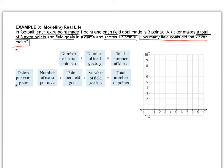I've underlined what I thought was important. Now we're going to work on the equations. The first equation is the number of extra points, which I don't know, plus the number of field goals, which I don't know, equals the total number of kicks, which I do know. So the first equation is x plus y equals 8.